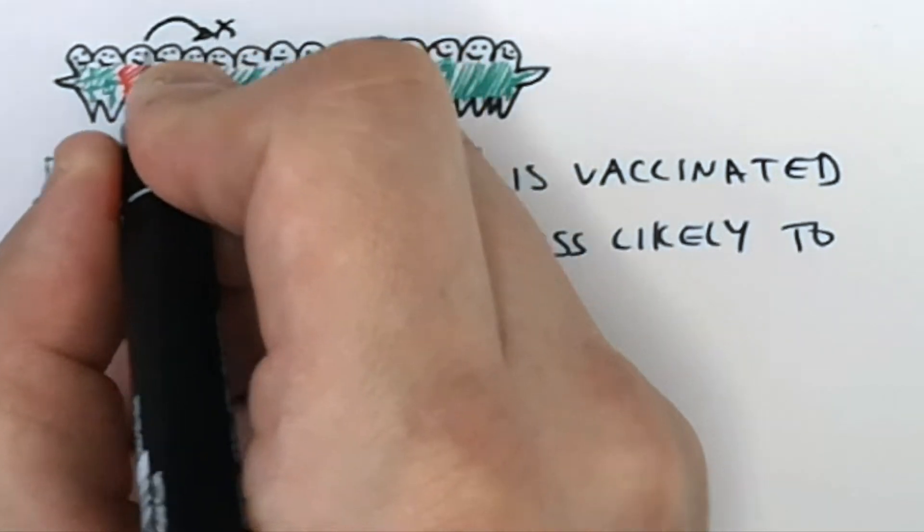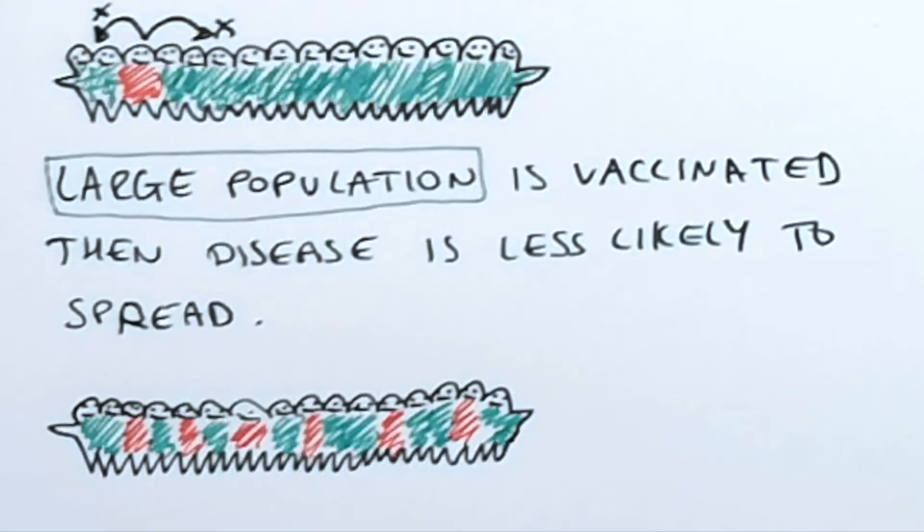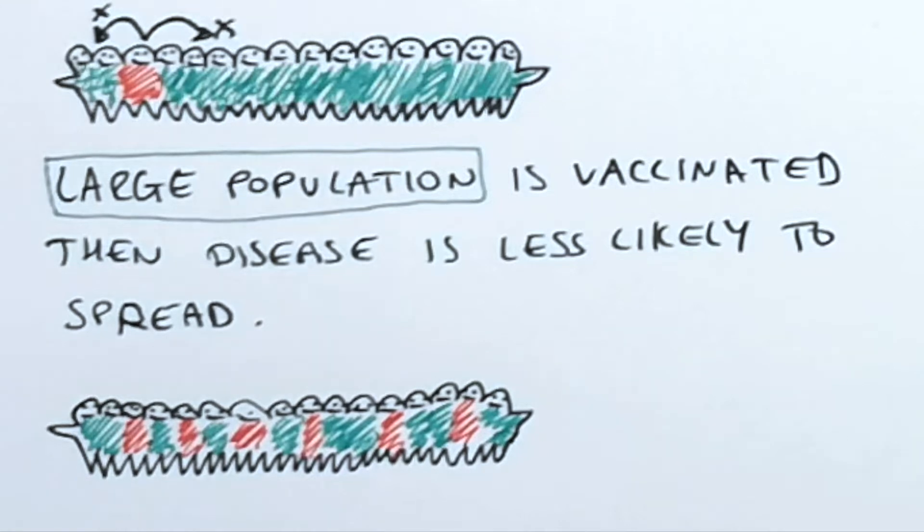So if the one person in the above diagram gets the disease, they cannot spread it to other people within the population because they've all been vaccinated. So you've controlled the spread of the disease.